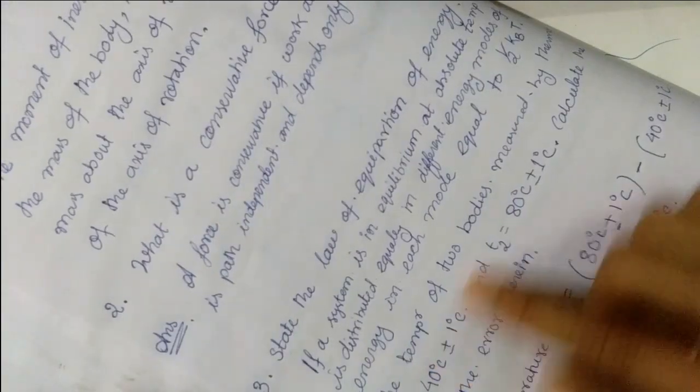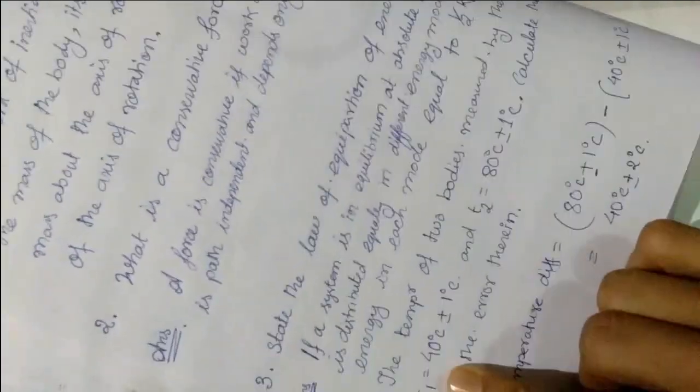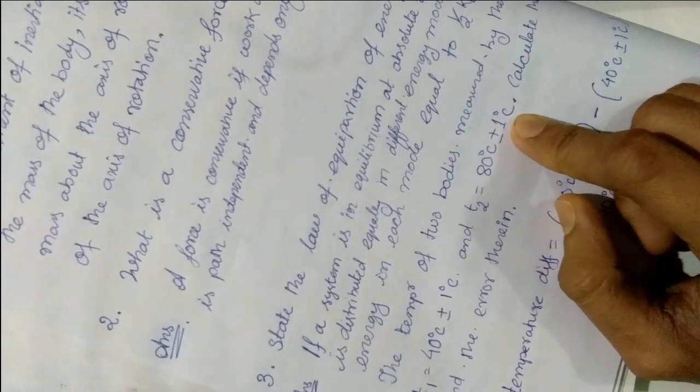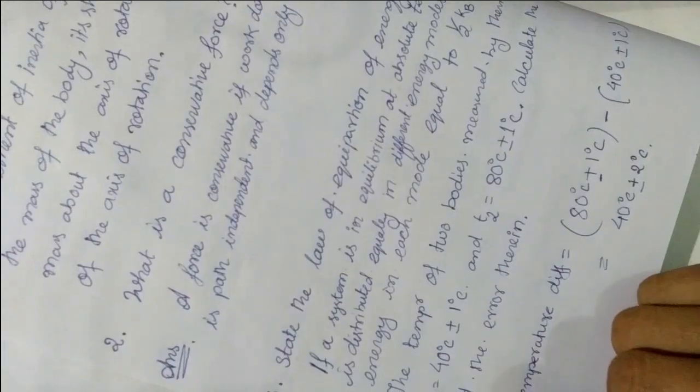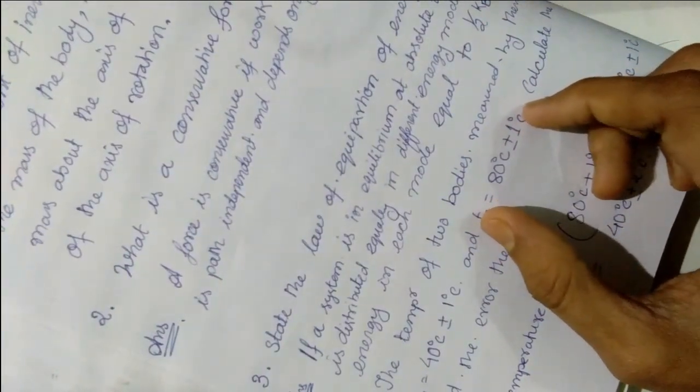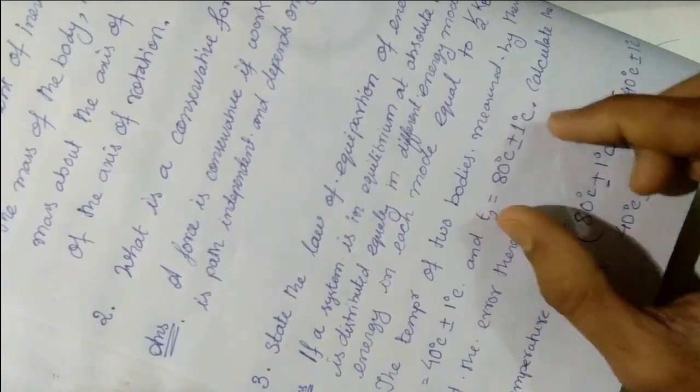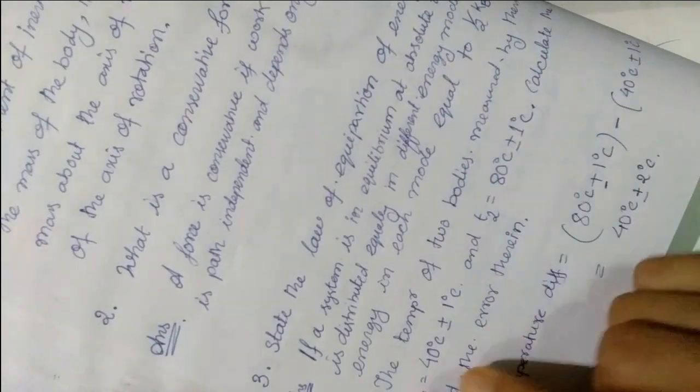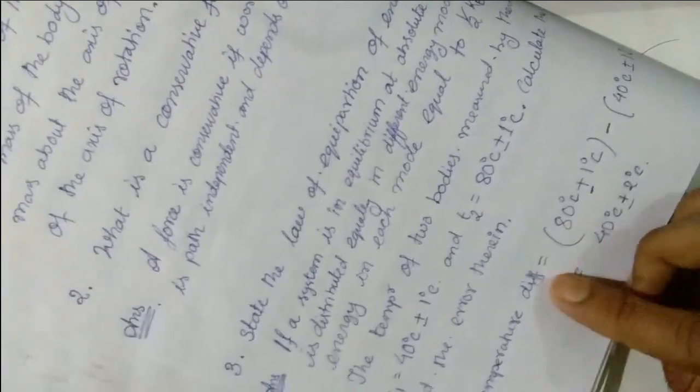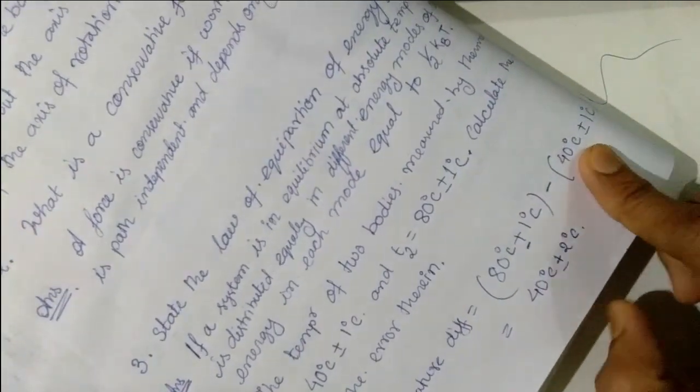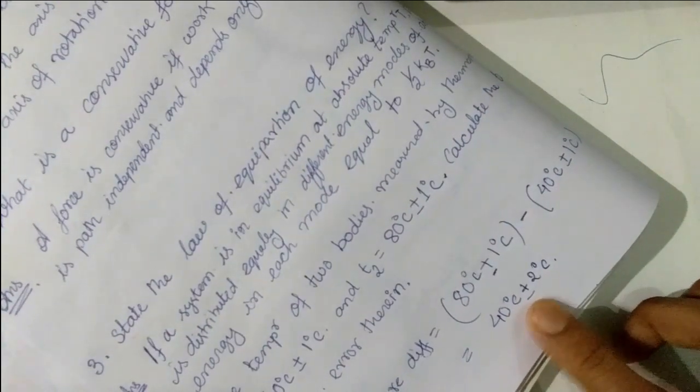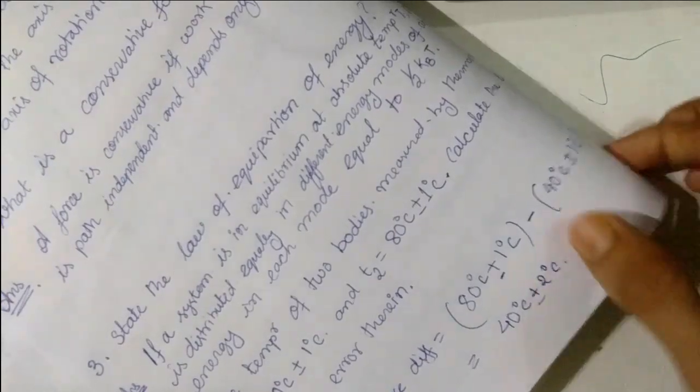Next question: The temperature of two bodies measured by thermometer T1 is given as 40 degrees plus or minus 1 degree Celsius. Calculate the temperature difference and the error in them. So temperature difference is equal to 80 degrees minus 40 degrees Celsius, which is 40 degrees. The error is plus or minus 2 degrees Celsius.